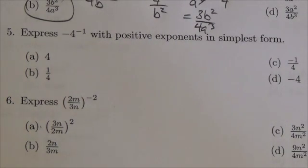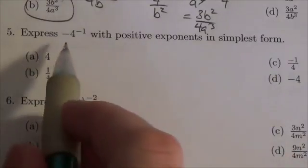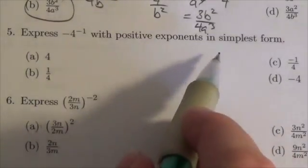Hi everyone, this is the Math 10c Exponents and Radicals Review and this is question number 5 in the multiple choice. Express negative 4 to the negative 1 with positive exponents in simplest form.